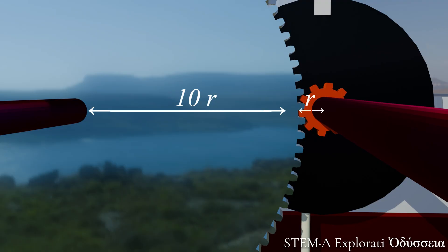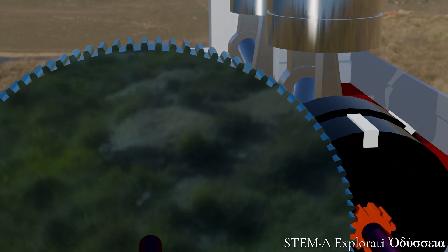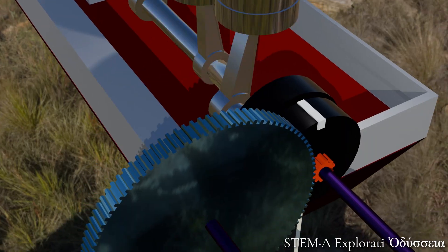And notice the blue gears radius is 10 times bigger. Remember that detail. The R to 10R ratio. It holds the key to something we will discuss shortly called mechanical advantage.